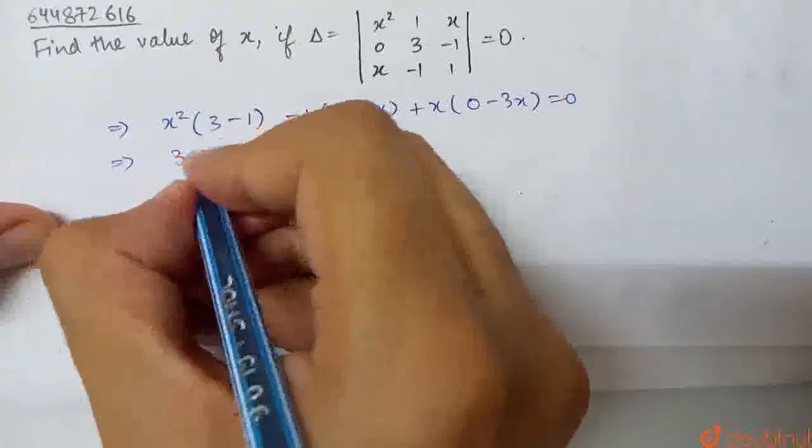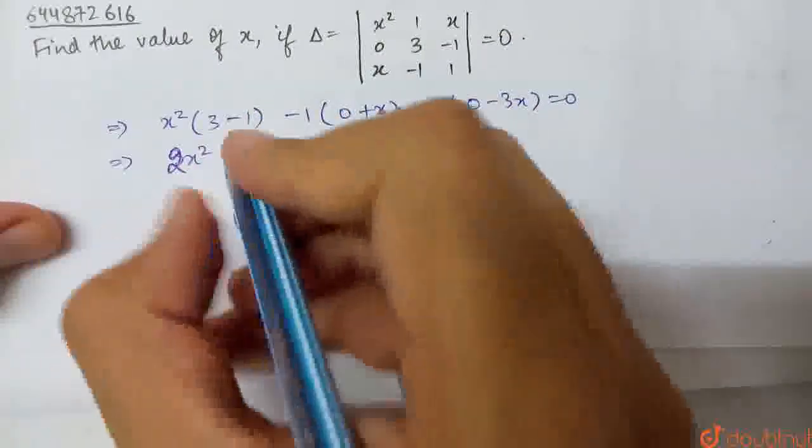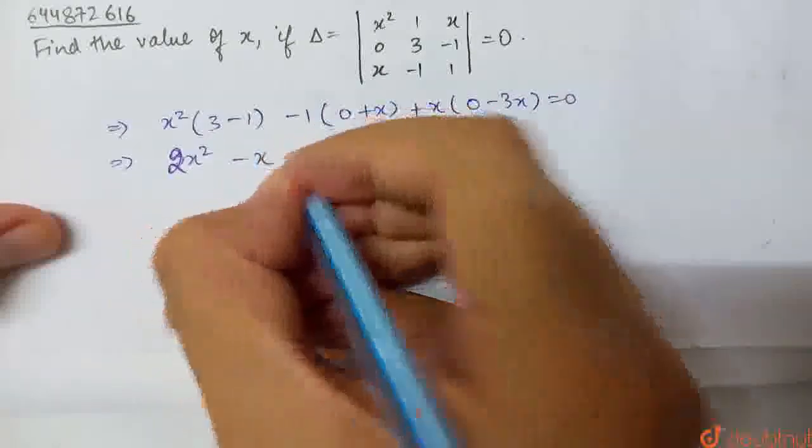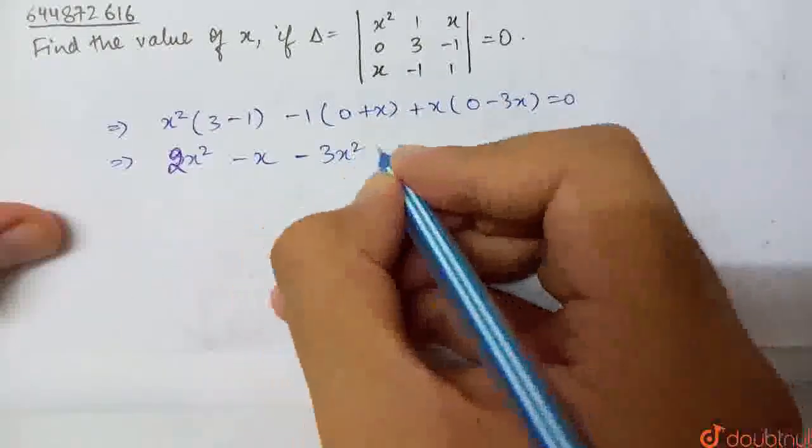So we have 2x squared, 3 minus 1 is 2, minus x, minus 3x squared equal to 0.